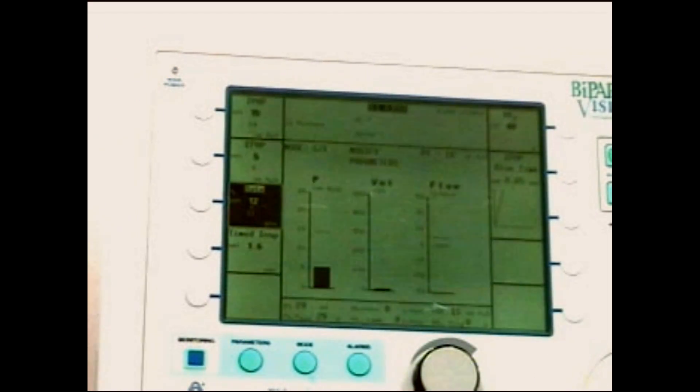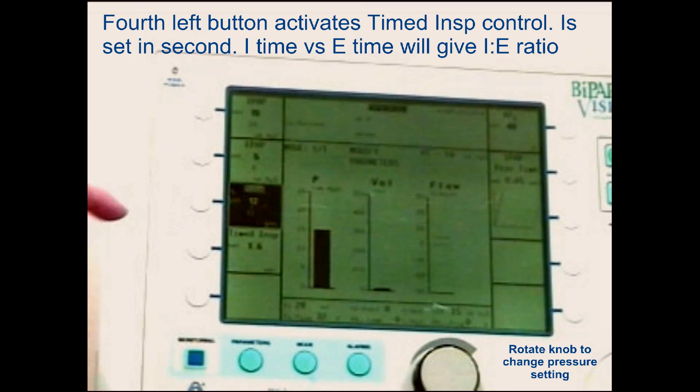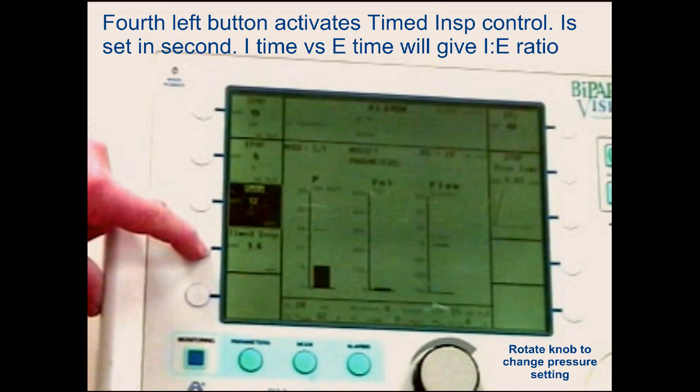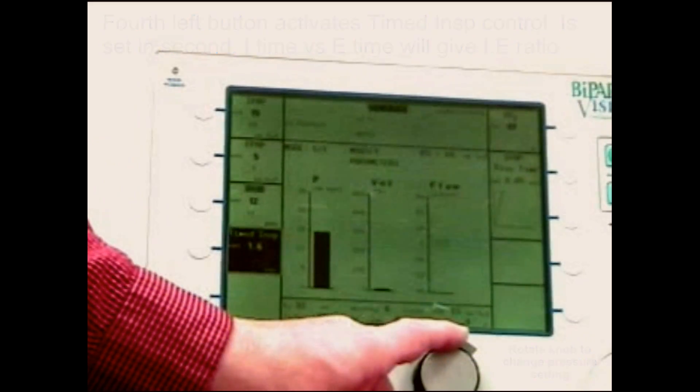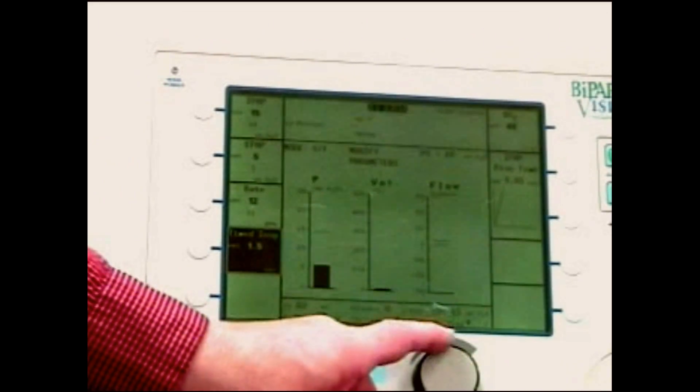Inspiratory time. If you want a 1 to 2 inspiratory time, it's going to be approximately 1.5 or 1.6. We'll go with 1.5 inspiratory time.